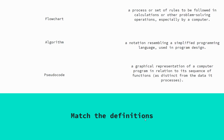So the top definition — 'a process or set of rules followed in calculations or problem solving' — is an algorithm. 'A notation resembling a simplified programming language used in program design' is pseudocode. And 'a graphical representation of a computer program' is your flowchart.